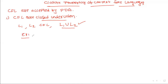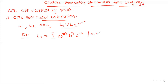Consider an example. L1 is the language A^N B^N C^M, where N, M ≥ 0. This language satisfies equal number of A's and B's, but there is no restriction on C.